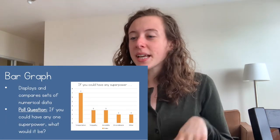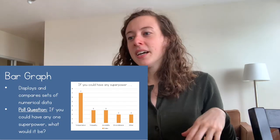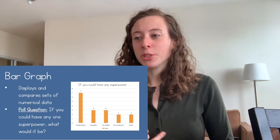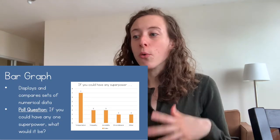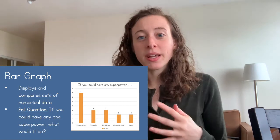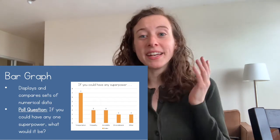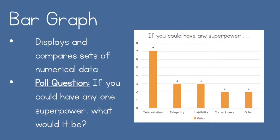Next is the bar graph, and as I said, bar graphs display and compare sets of numerical data. I chose to ask: if you could have anyone's superpower, what would it be? People wrote in what superpowers they would want. Teleportation — like being able to fly or transport yourself to different places — got the most votes with seven. Telepathy, like reading people's minds, got three votes. Invisibility also got three votes, so those tied, and you can see that because the bars are the same height.